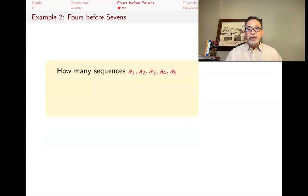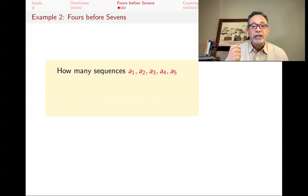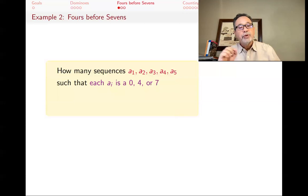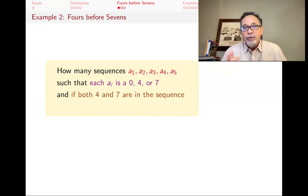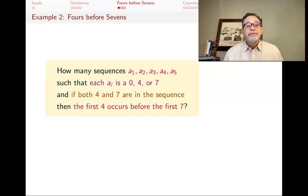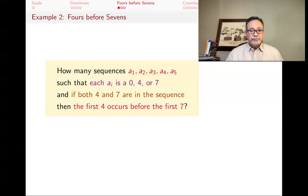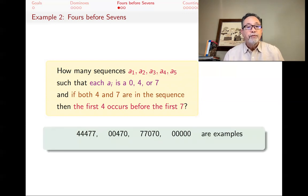Our second example is also a counting problem. I want to know how many sequences of five terms a1, a2, a3, a4, a5 I can have, with these conditions: first, each one of these a_i is 0, 4, or 7. So I'm only using zeros, fours, and sevens to make a sequence of length five. And there's a rule: if you have both 4 and 7 in your sequence, then the first 4 should come before the first 7. So for example, 4, 4, 4, 7, 7 is one valid sequence — there are three fours and two sevens, and four comes before seven.